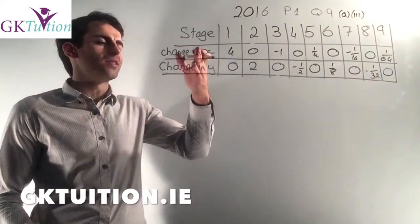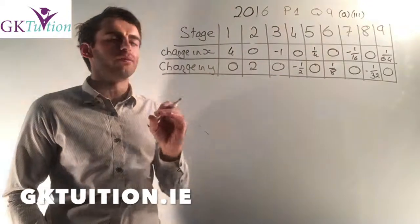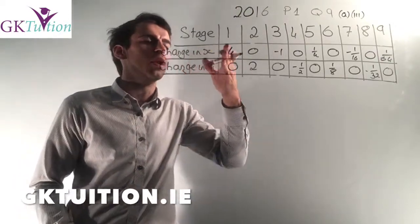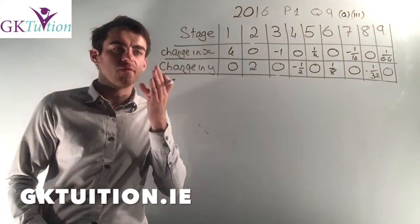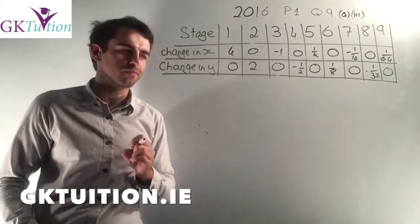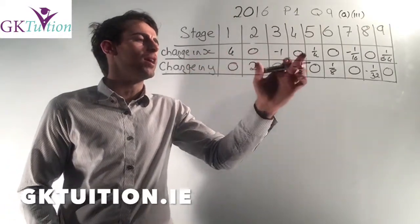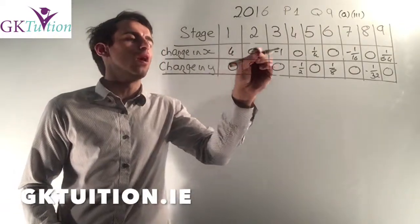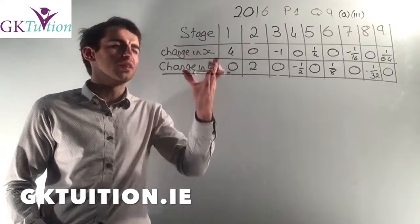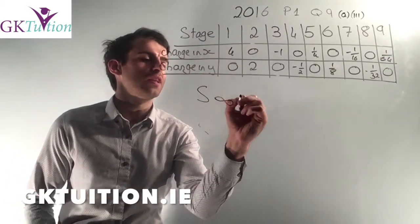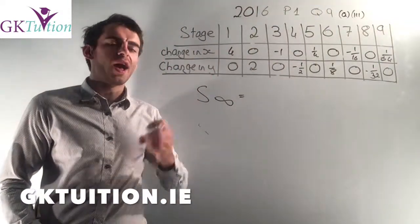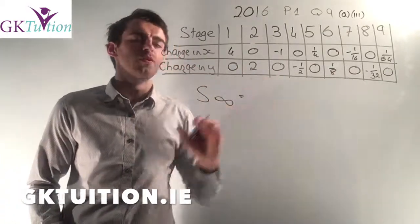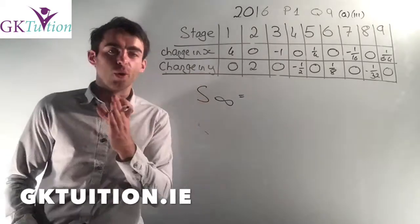What we need to do is recognize that to find the final x coordinate that the point is approaching, we need to work out the sum to infinity of the horizontal movements. And to find the y value that the point is approaching, we get the sum to infinity of the vertical movements. We can ignore the zeros since they don't impact where the point is approaching — so if we're finding the sum to infinity of the horizontal movements, we ignore all the zeros.